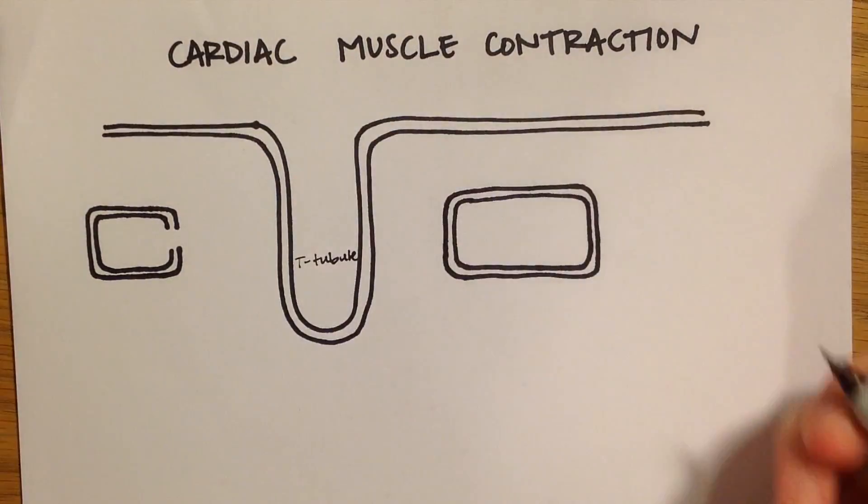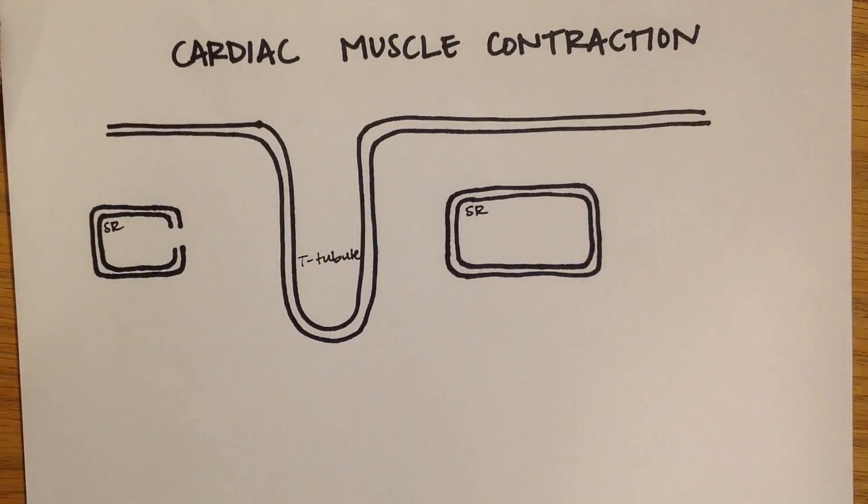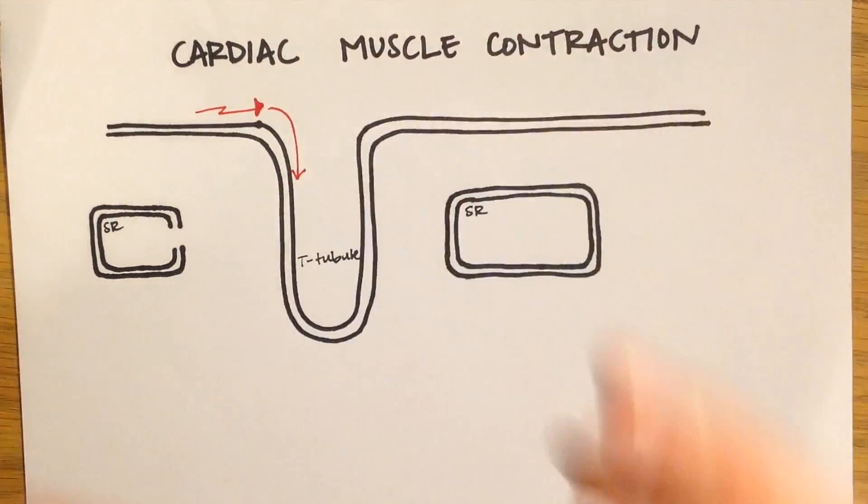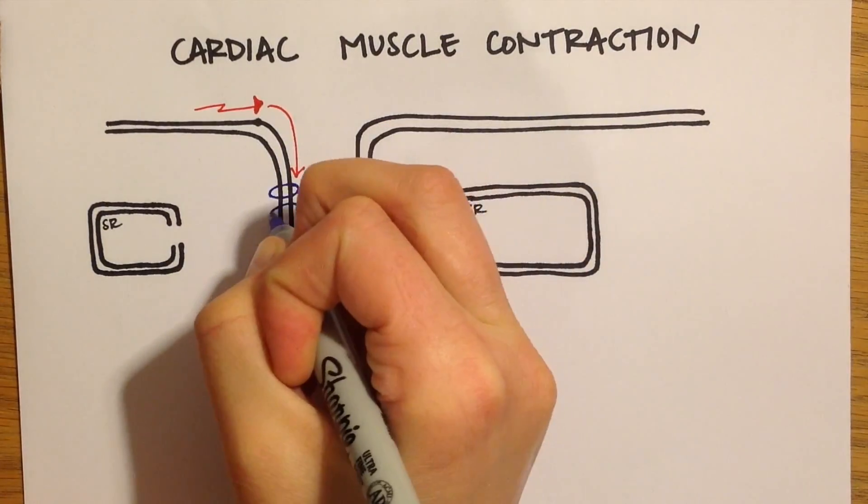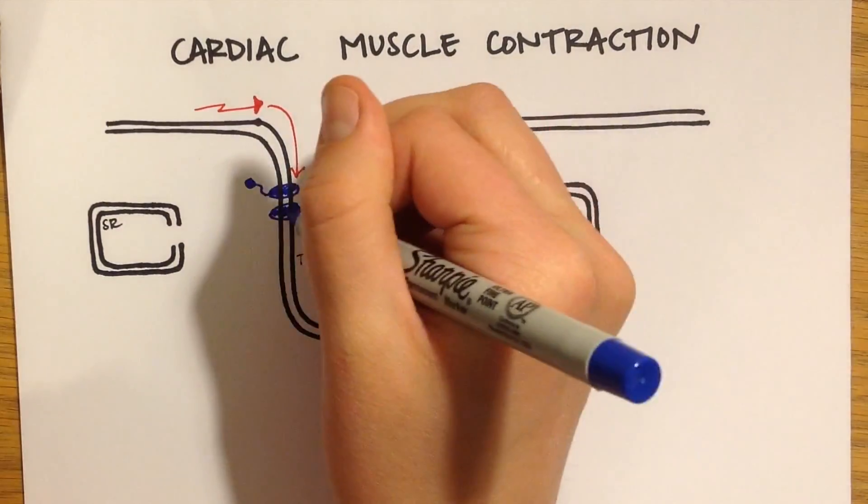Let's now talk about the electrical signal and how it leads to cardiac muscle contraction. First, the action potential enters from the adjacent cell. Voltage-gated calcium channels open in the T-tubule and calcium enters the cell.